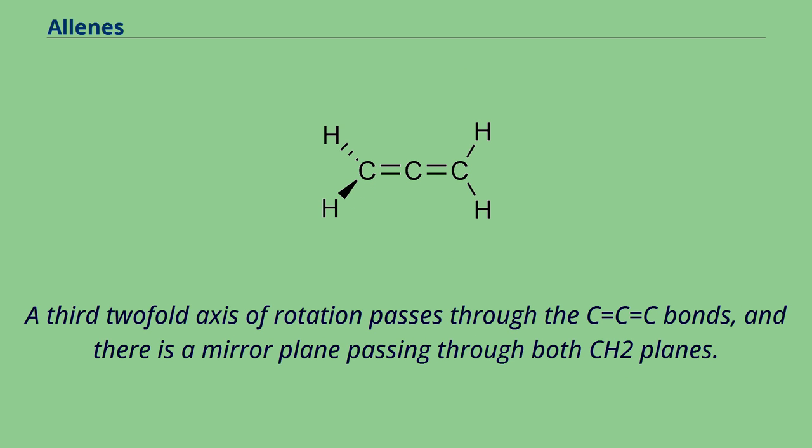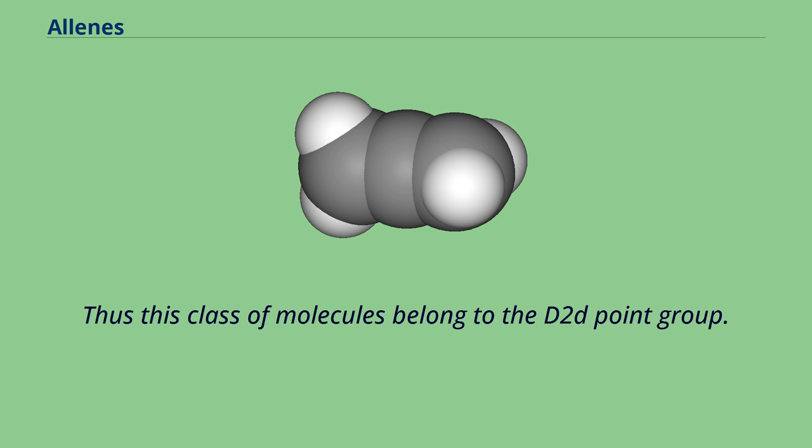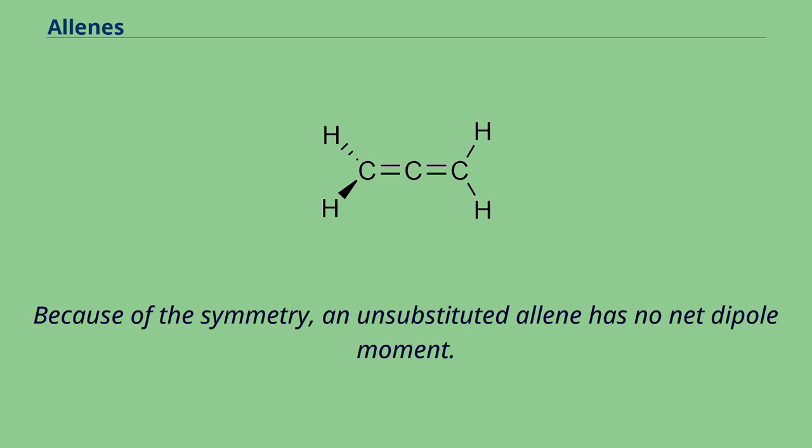A third twofold axis of rotation passes through the C=C=C bonds, and there's a mirror plane passing through both CH2 planes. Thus this class of molecules belong to the D2d point group. Because of the symmetry, an unsubstituted allene has no net dipole moment.